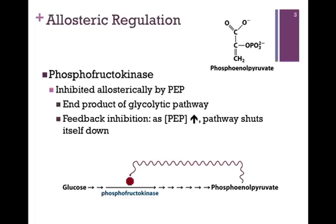Let's think for a moment about the logic of that. If PEP concentration is increasing, that can only occur if the cell is not utilizing that product. If the cell is not using the product of the pathway, why continue to generate more of that product? And so, as the product concentration increases, it shuts down its own synthesis.